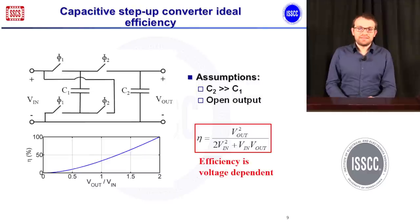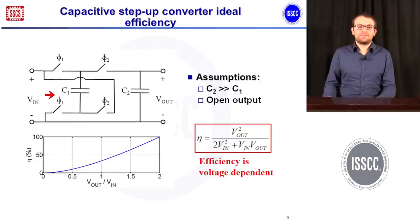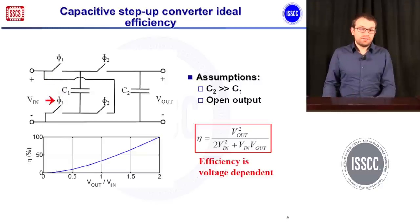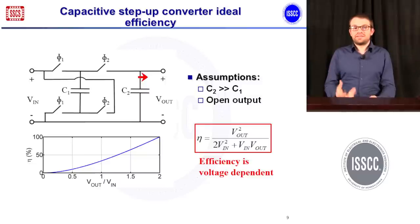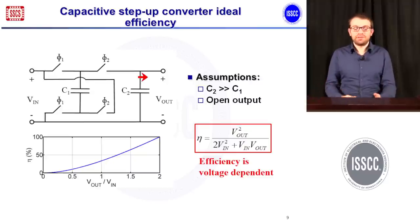What happens with capacitive step-up converters? Their working principle is easy to understand. During phase Φ1 you connect capacitor C1 and charge it to voltage VIN, and then during phase Φ2 you place C1 in series with VIN towards capacitor C2. At steady state with no load connected, you will have an output voltage equal to twice the input voltage.